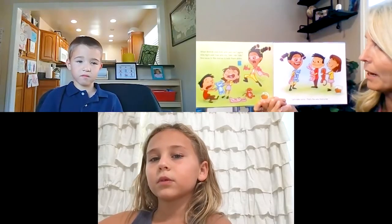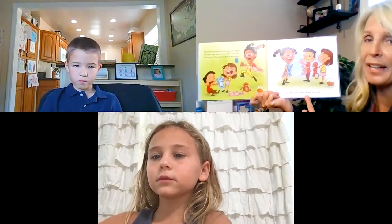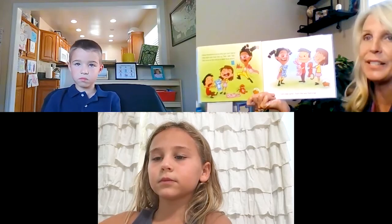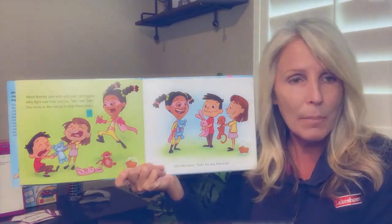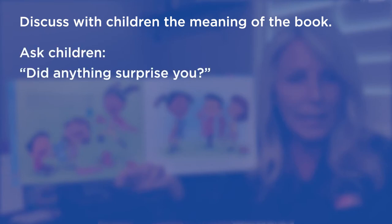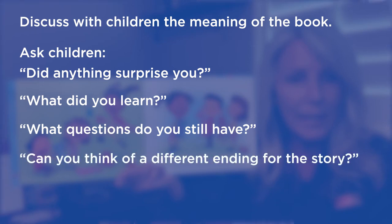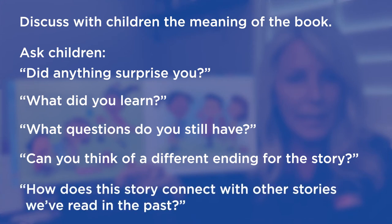'She races to the rescue to help them share. Let's take turns — that's the way that is fair.' When you've finished reading, have a conversation about the overall meaning of the text. Ask the children: Did anything surprise you? What did you learn? What questions do you still have? Can you think of a different ending for the story? You can even ask your students how this story might connect to other stories that we've read in the past.